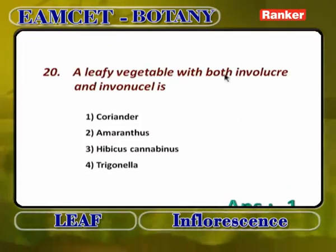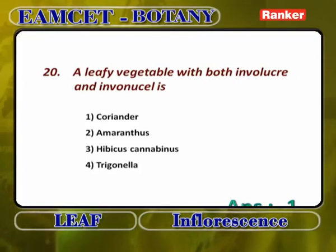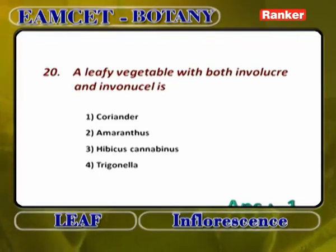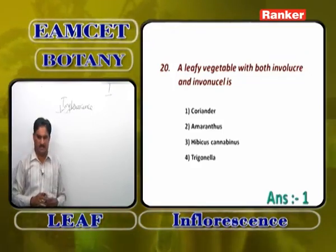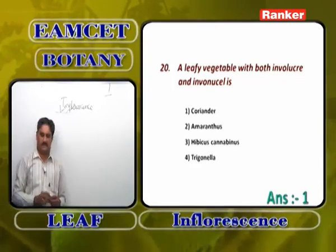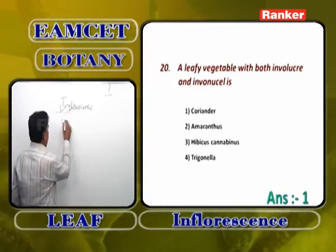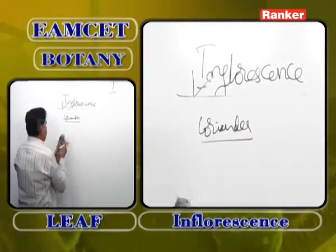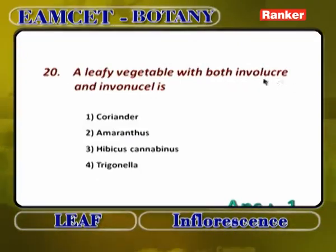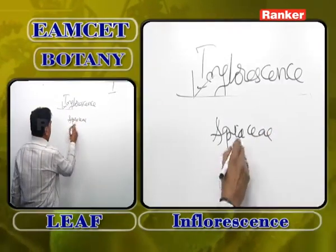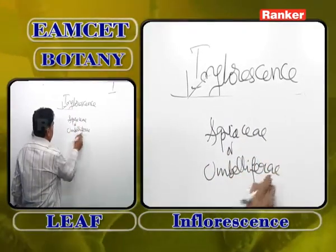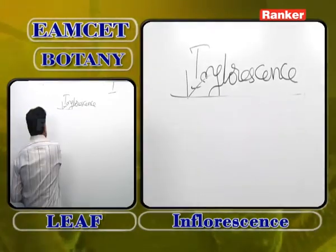A leafy vegetable with both involucre and involucel — this means compound umbel inflorescence. Amaranthus is a leafy vegetable but shows simple spike. Hibiscus cannabinus is a leafy vegetable but shows axillary solitary cyme. Trigonella foenum-graecum is a leafy vegetable but shows simple raceme (Fabaceae). The answer is Coriander — it has involucre and involucel, features of compound umbel inflorescence, which is characteristic of plants of family Apiaceae/Umbelliferae.